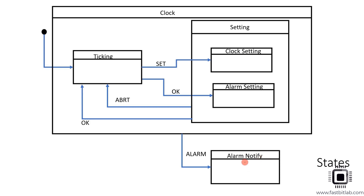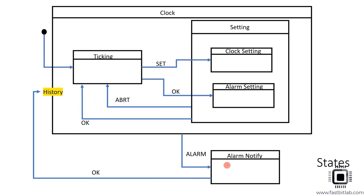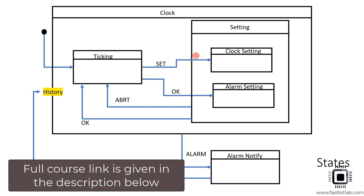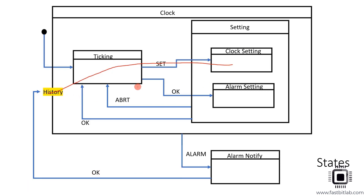When the application is in alarm notification state, it shows the alarm notification to the user, as you saw in the demo. Whenever the user presses OK, the alarm notification ends and the application goes back to the history of the clock state, because when the alarm took place the user might have been doing clock setting or alarm setting. That's why it makes sense to return to the history state.